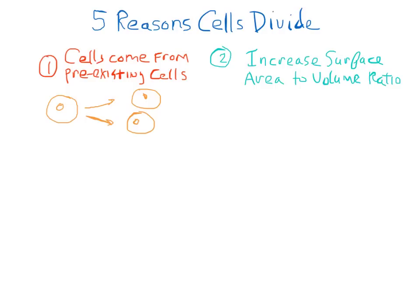So if a cell did not divide and it just got bigger and bigger over time, it would not be able to efficiently absorb food and eliminate waste.